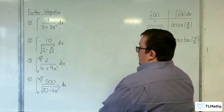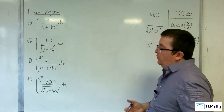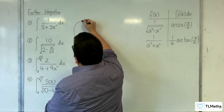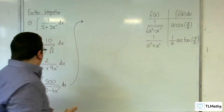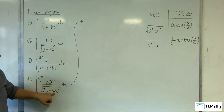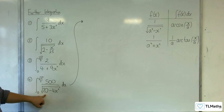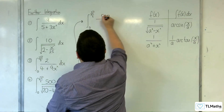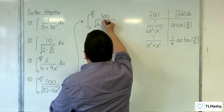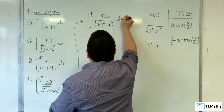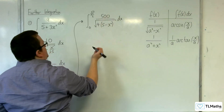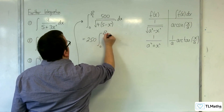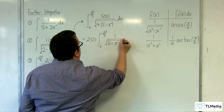Number 4. We have the integral between 0 and root 5 over 2 of 500 over the square root of 20 take away 4x squared. We can see it's going to be in the form of arc sine because we've got the square root. The first thing I want to do is factor the 4 out of the two terms within the square root sign. We'll have the integral between 0 and root 5 over 2 of 500 over the square root of 4 lots of 5 take away x squared dx. The square root of 4 is 2, so 500 over 2 is 250. Pull that outside: 250 times the integral between 0 and root 5 over 2 of 1 over the square root of 5 take away x squared dx.